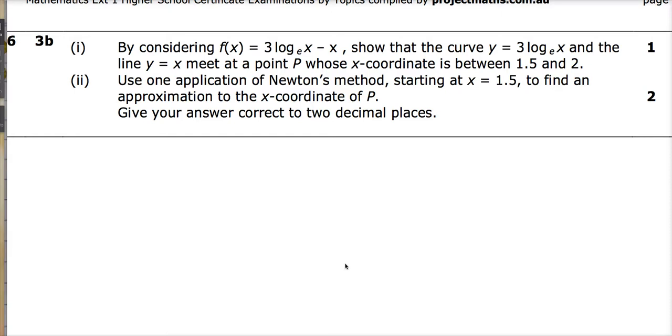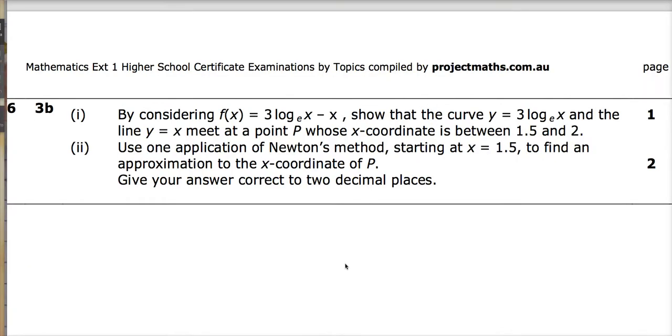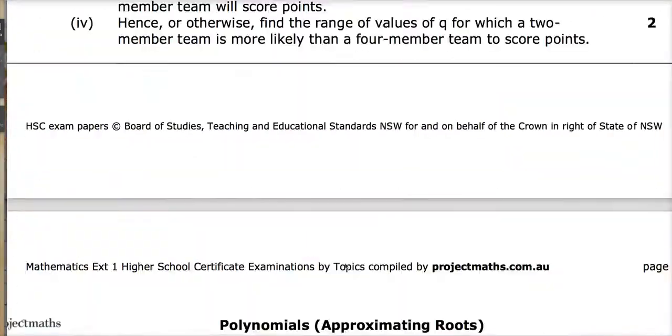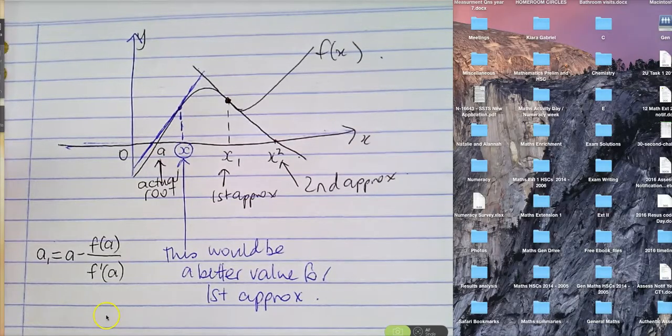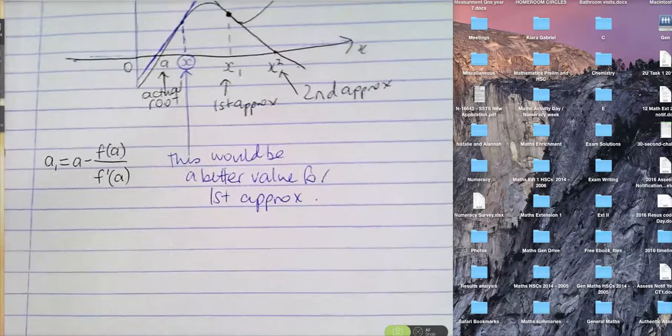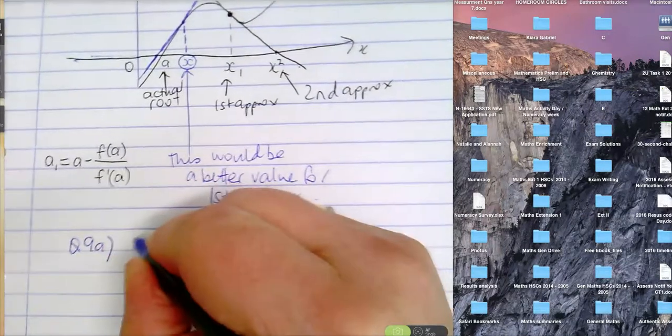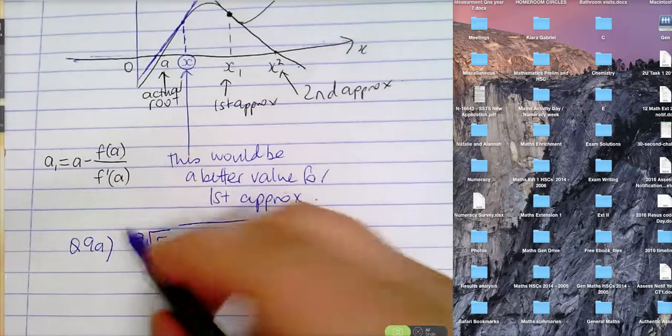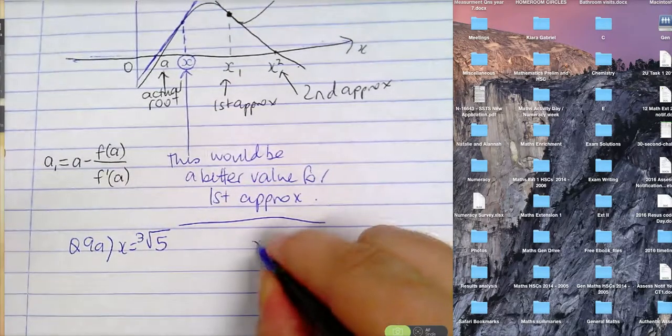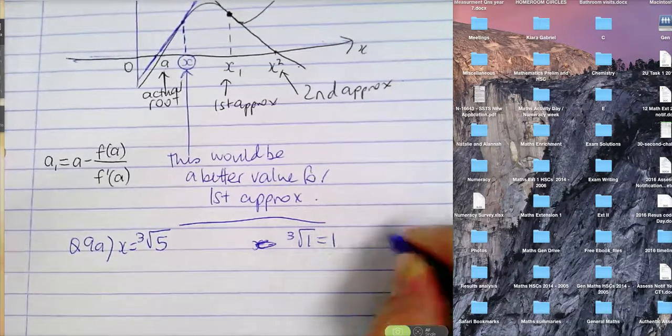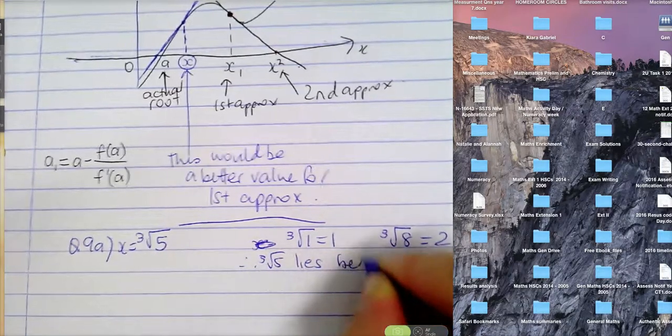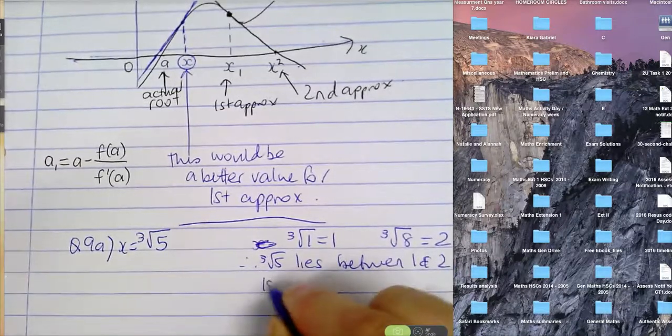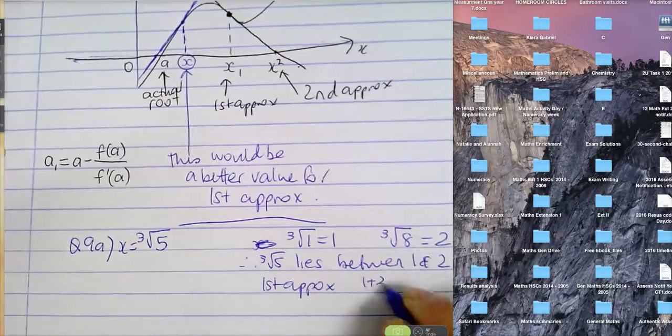It's pretty easy to apply. Once you've learned how to differentiate logarithmic and exponential functions, which you're doing early next term, we can come back and finish these off. All right. So that's it. I think you know enough about this at the moment. And we're going to look at, for those that aren't here today, that's only one person in question 9a to do a question like this, find the approximation for that. You just note that the cubed root of one is one, the cubed root of eight is two. So therefore cubed root of five lies between one and two.